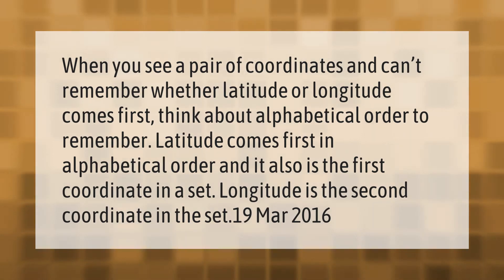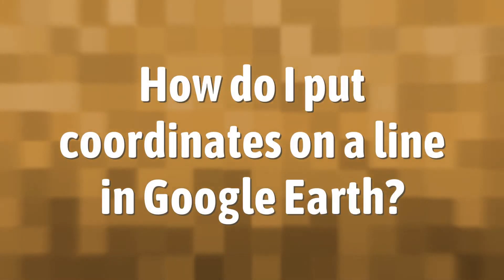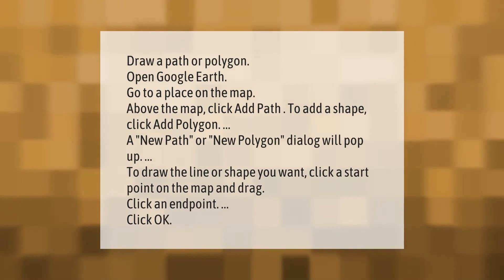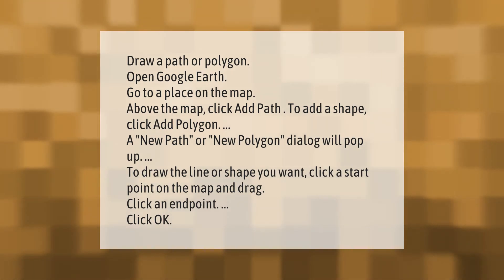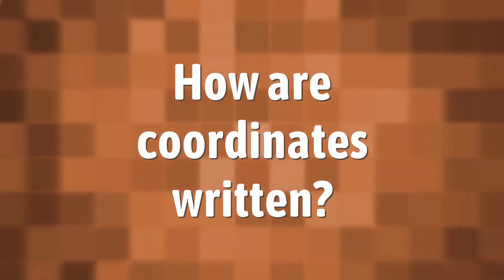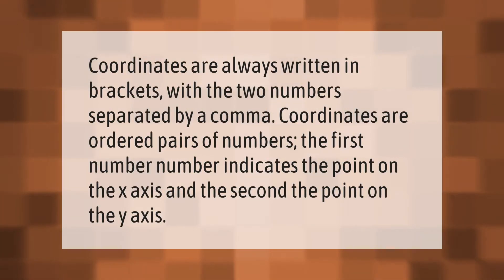To draw a path or polygon, open Google Earth and go to a place on the map. Above the map, click 'Add Path' to add a line, or click 'Add Polygon' to add a shape. A new path or new polygon dialog will pop up. Click a start point on the map and drag, then click an end point, and click OK.